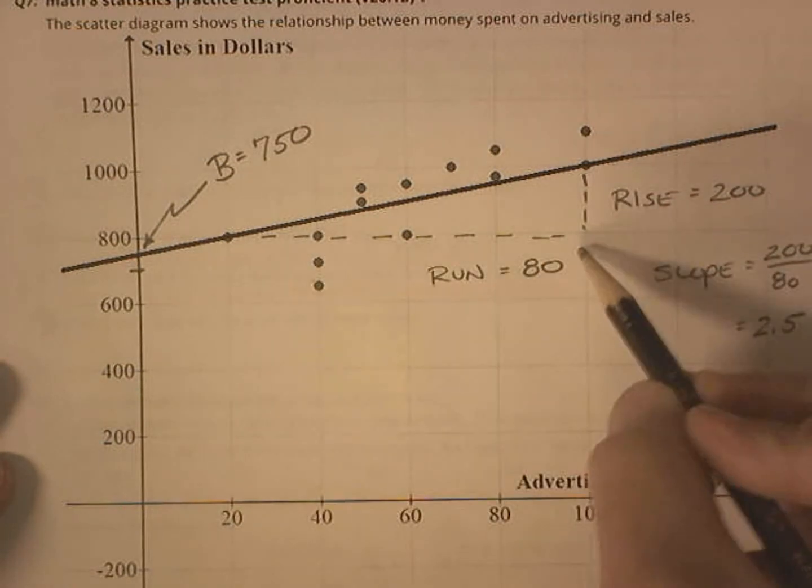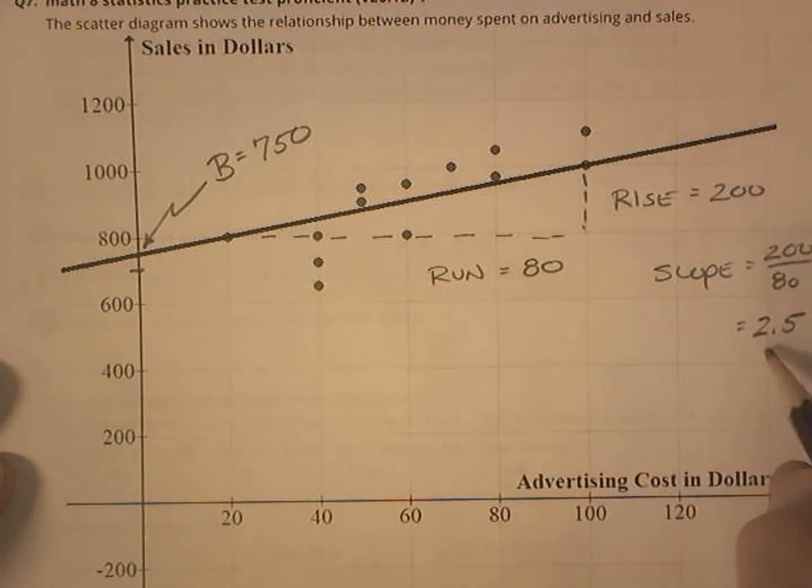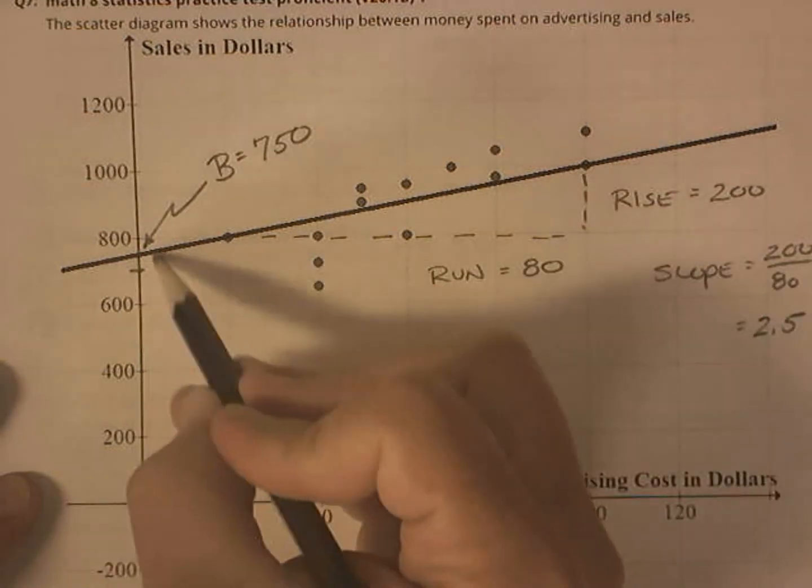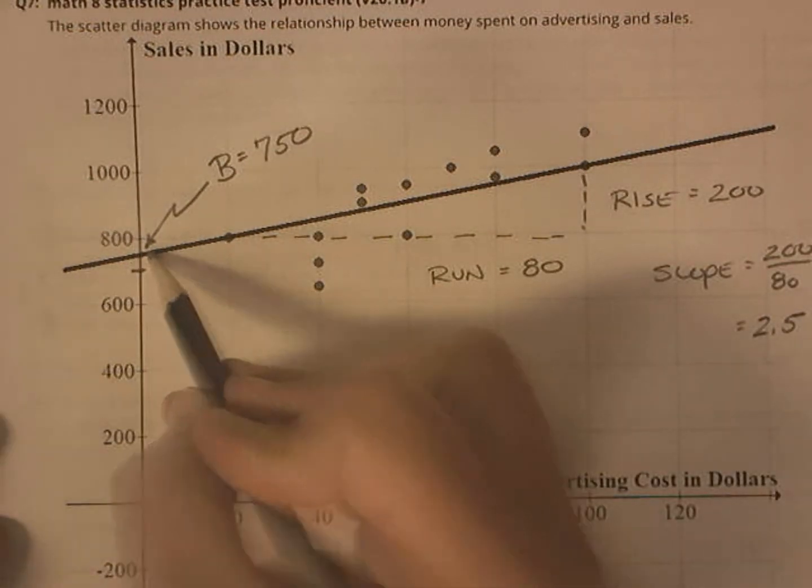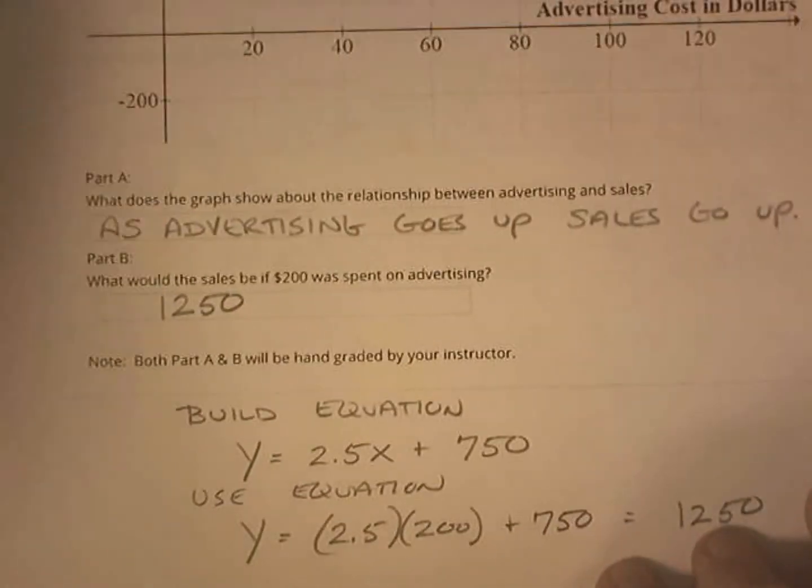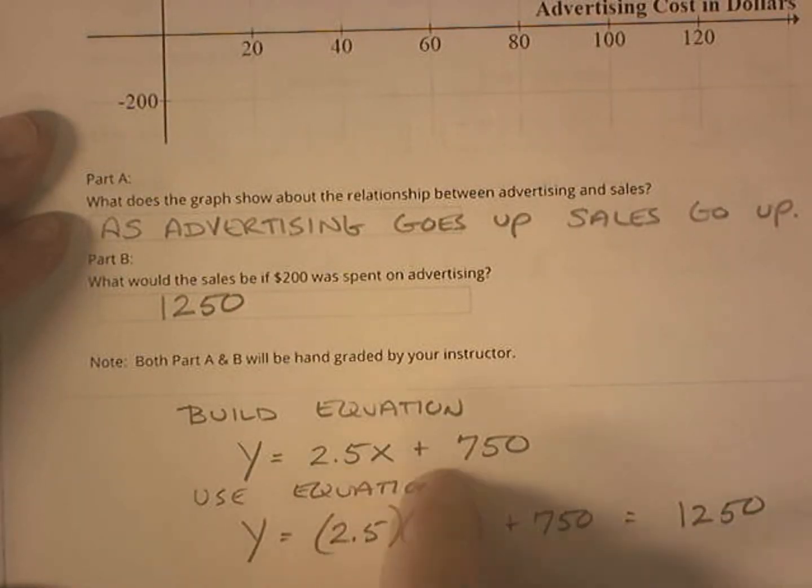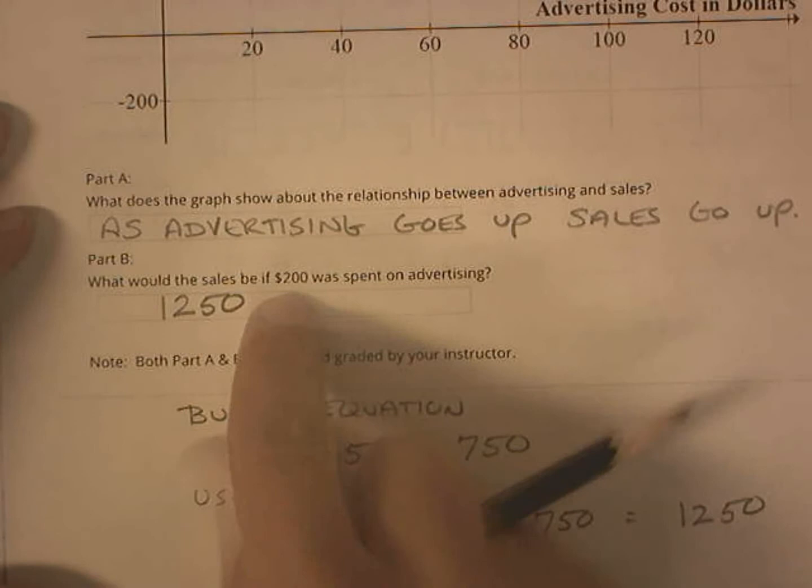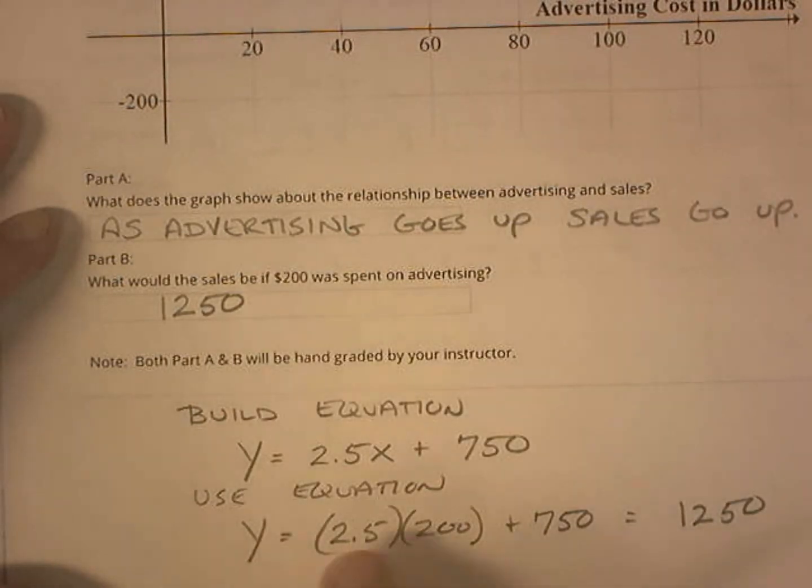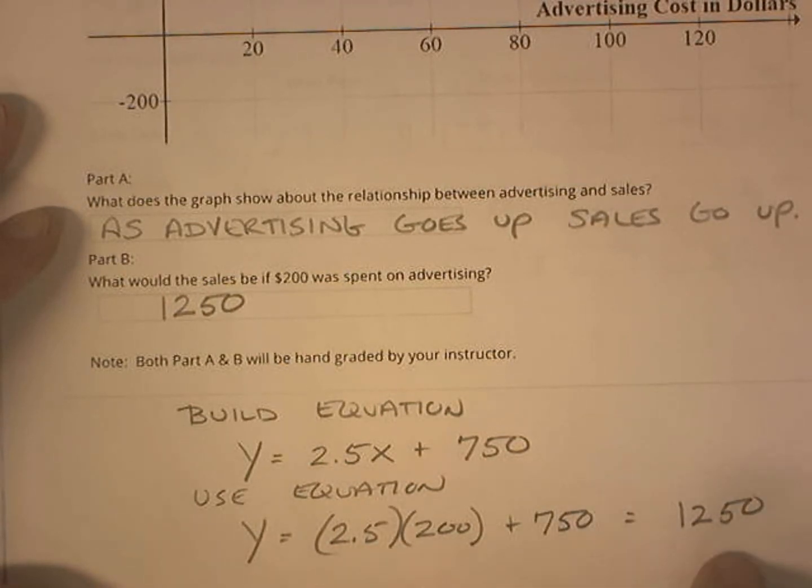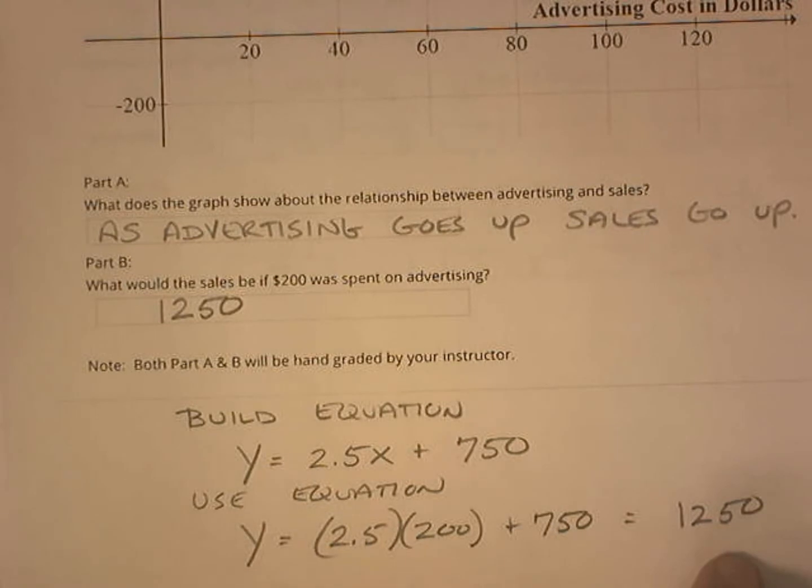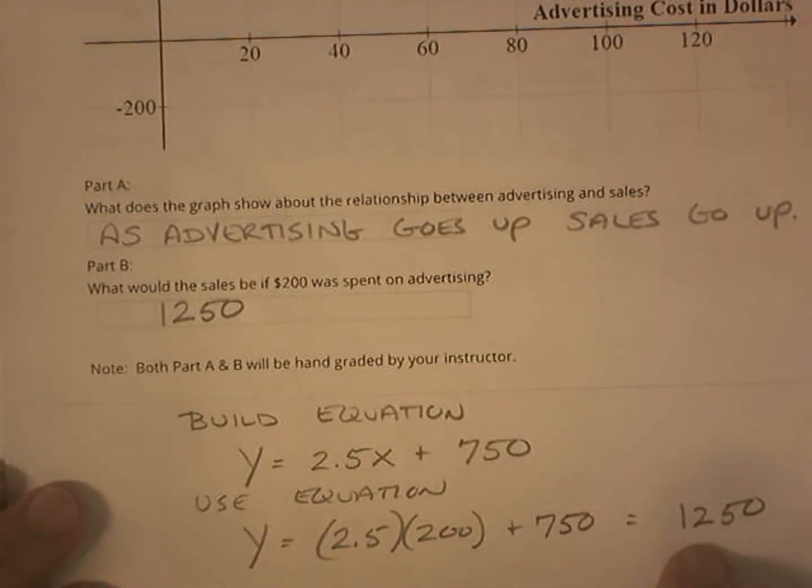So I started by finding my slope, which is 200 over 80. So my slope is 2.5. I found my y-intercept, which I'm estimating is about 750. So my equation is y equals 2.5x plus 750. Now that I have the equation, I can plug 200 into it. So 2.5 times 200 plus 750, which is 1,250. So if they spend about $200, they should expect to make $1,250 or something around there.